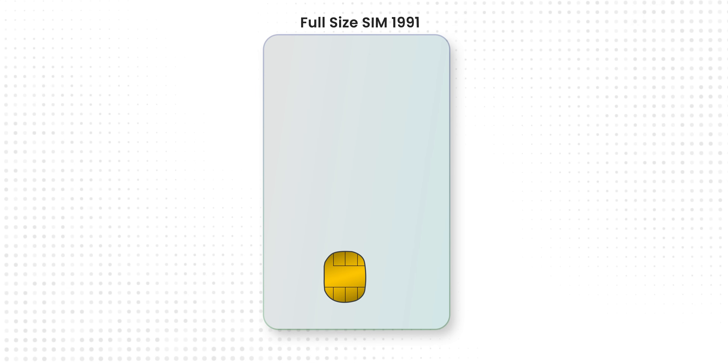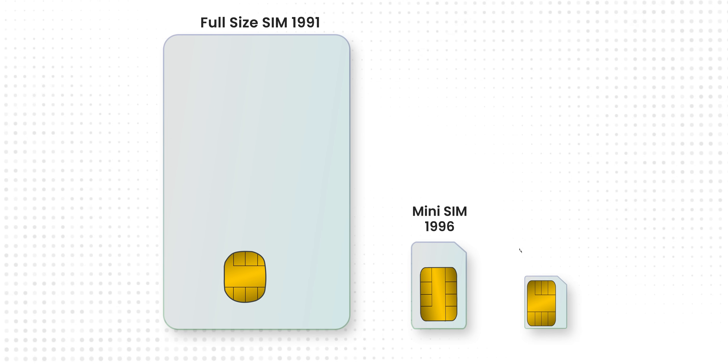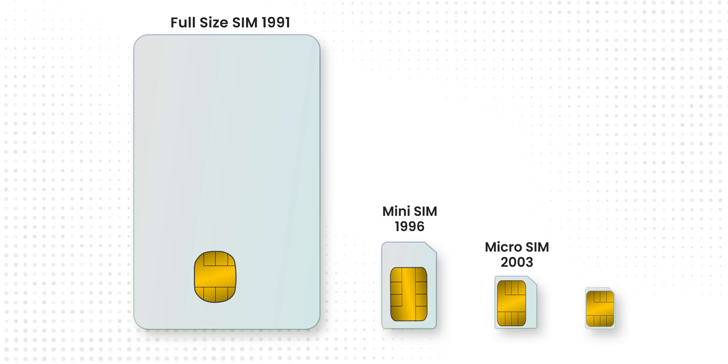The full-size SIM — the first-generation SIM card — was the size of a credit card. And then the mini SIM was much smaller. I think you know the first SIM was a mini SIM. And then the micro SIM was also introduced. And finally we have the nano SIM.